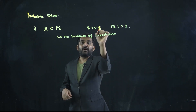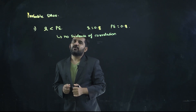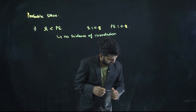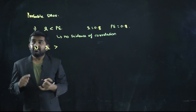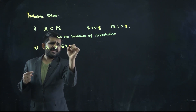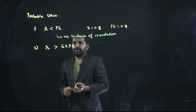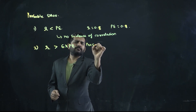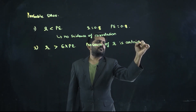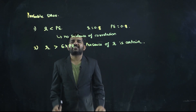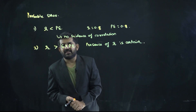Even if r is 0.8, indicating a significant degree of correlation, if the probable error is 0.9, then there is still no evidence of correlation. Point number 2: If r is greater than 6 times the probable error, then the presence of the correlation coefficient is certain — meaning there is a definite correlationship between two variables, even in the population.